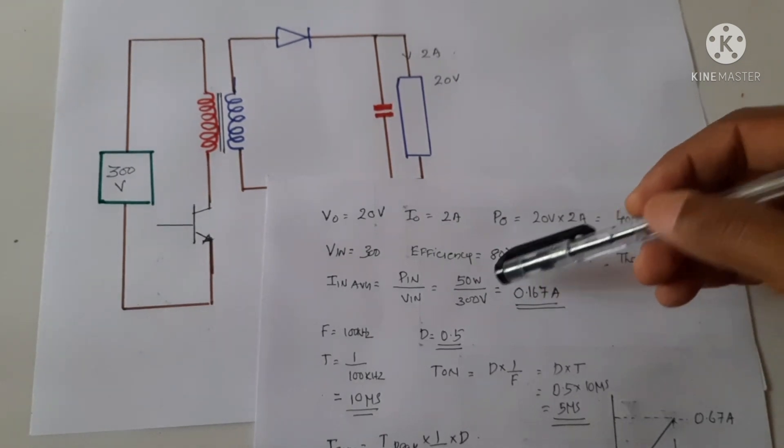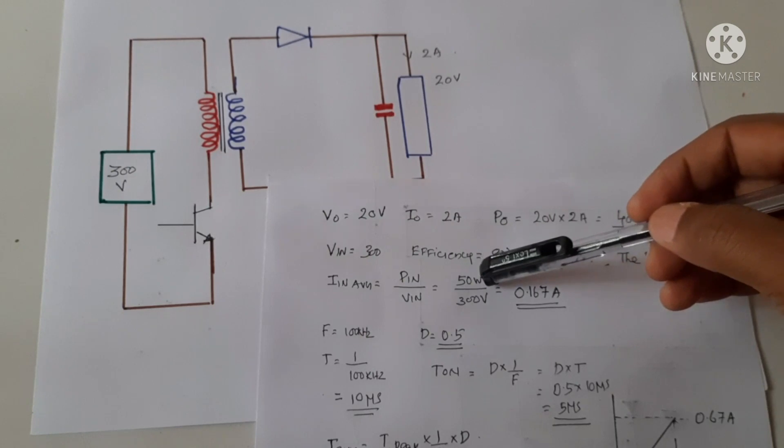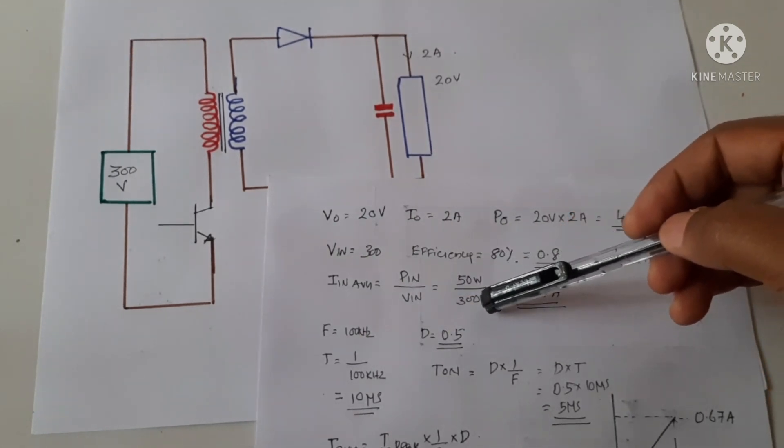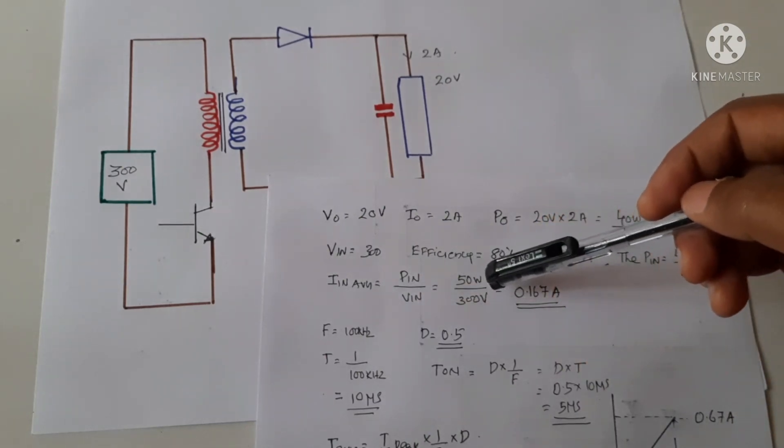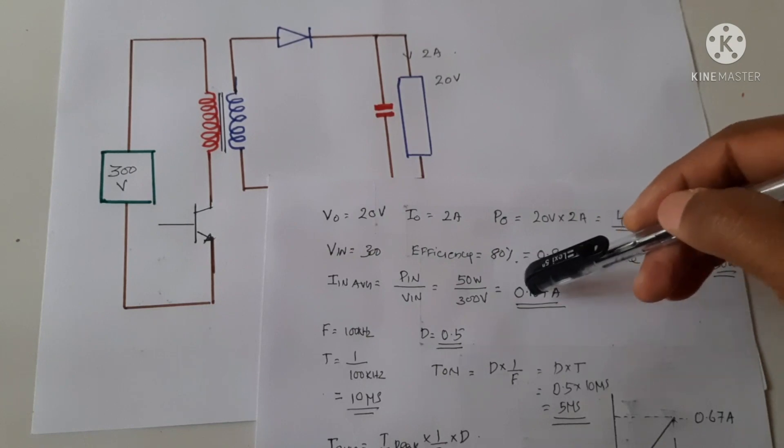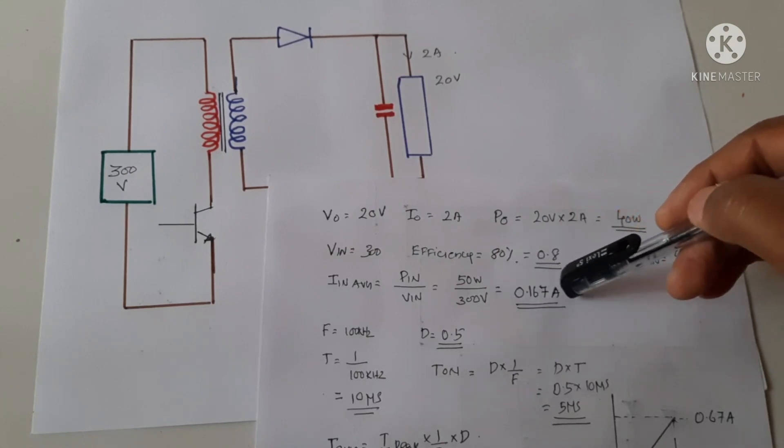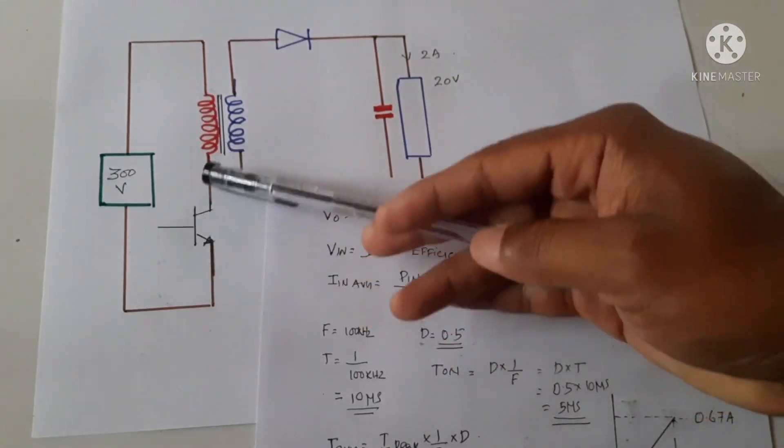Now we know that input power we want is 50 watts and the input voltage is 300 volts. So the current through the input will be 50 watts divided by 300 volts, that is 0.167 amperes, the average current flowing through the primary.